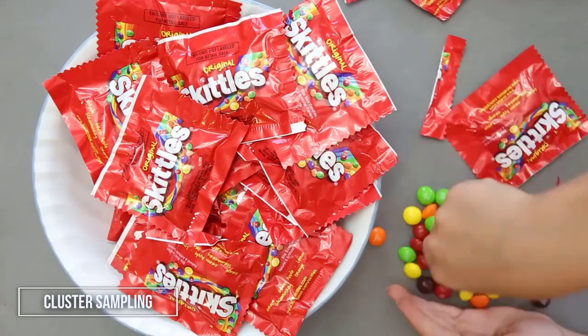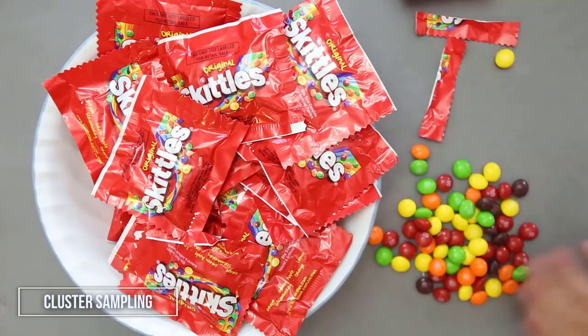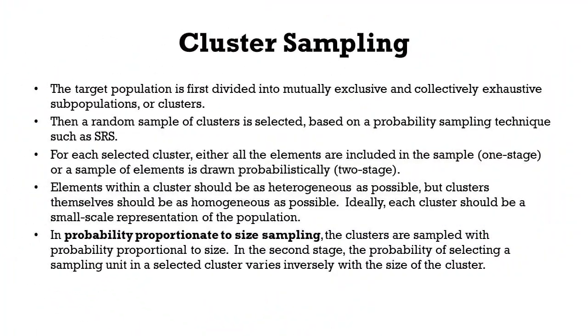You have a group of population called clusters. Clusters are homogeneous — when you look at two different clusters, they look alike, but inside they are different. You take some clusters, and from those clusters you take the samples. The simple random sample of clusters is selected based on a probability sampling technique such as simple random sampling.